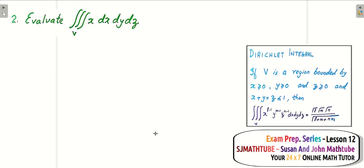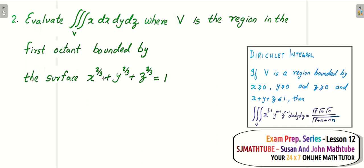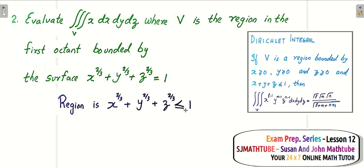Now let's look at another question: evaluate the triple integral of X DX DY DZ where V is the region in the first octant bounded by the surface X^(2/3) + Y^(2/3) + Z^(2/3) = 1. This looks very different from the standard region, but we will manipulate it into the required format. It's given as first octant, so X ≥ 0, Y ≥ 0, Z ≥ 0. Saying 'bounded by' means the region is inside the surface, implying X^(2/3) + Y^(2/3) + Z^(2/3) ≤ 1.